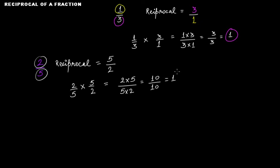That gives 10 over 10, which is 1. So once again you get 1 when you multiply a fraction with its reciprocal. The reciprocal is the inverse of any fraction: the denominator becomes the numerator and the numerator becomes the denominator, and multiplying a fraction by its reciprocal always always gives 1.